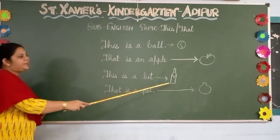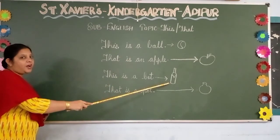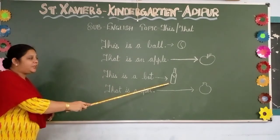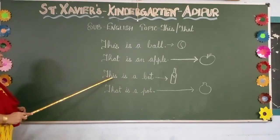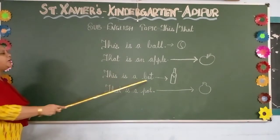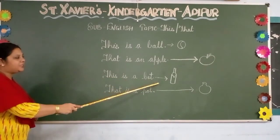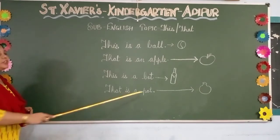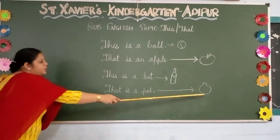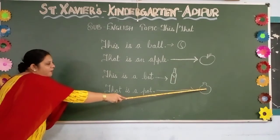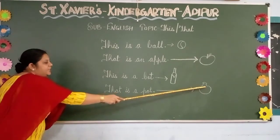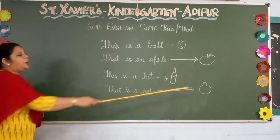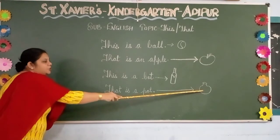Now is the bat near or far? Correct, it is near. So you will say, 'This is a bat.' Now the pot — where is the pot? It is far, you can see. So you will say, 'That is a pot.'